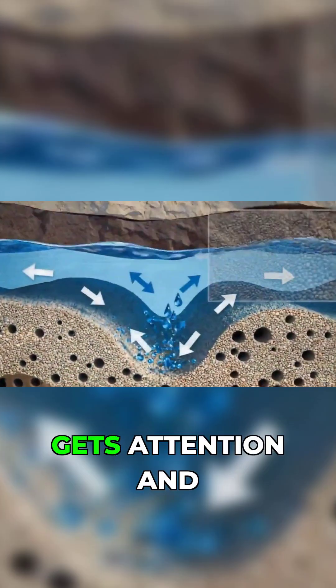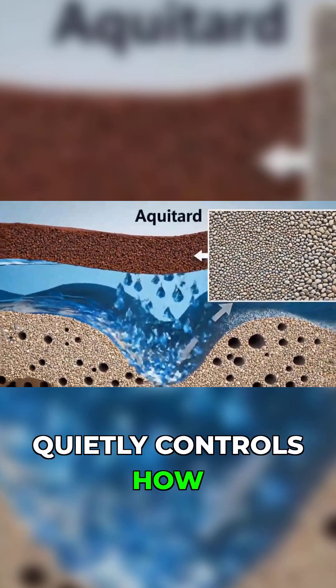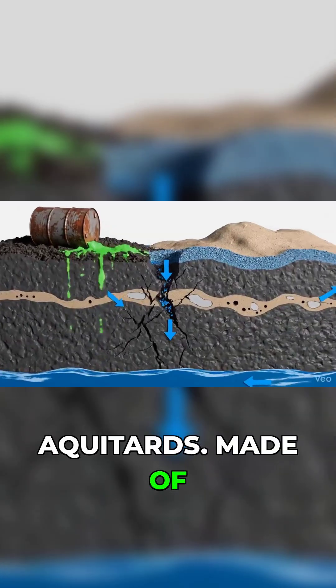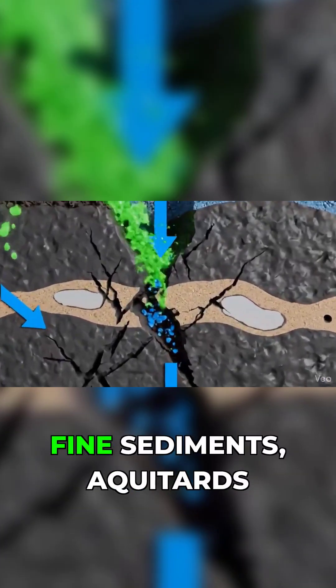But there's another layer that rarely gets attention and quietly controls how groundwater behaves. These layers are called aquitards, made of clay, silt, and fine sediments.